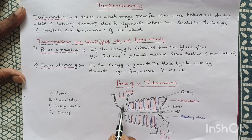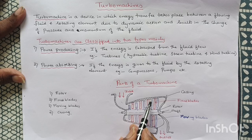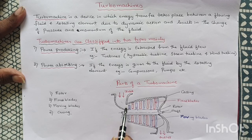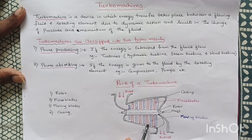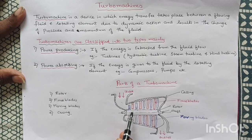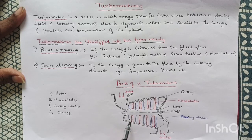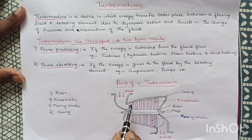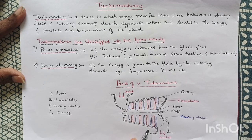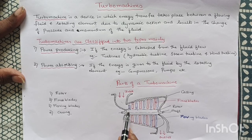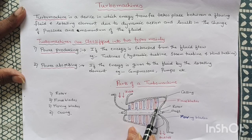When the steam enters the turbine, it enters at a smaller portion. The cross-sectional area of the steam turbine goes on increasing. As the steam expands, its specific volume increases with a reduction in pressure. In order to accommodate the same flow rate throughout the Turbomachine, the flow area must increase. For that purpose, the cross-sectional area increases, and the height of the blades also goes on increasing.